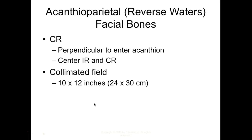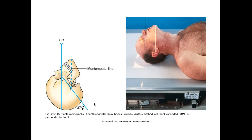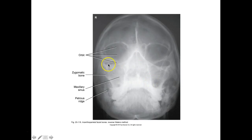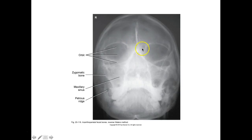Collimate smaller than 10x12 — that would be very large. This view is much easier for patients who can't tolerate the standard Waters. If a patient has difficulty extending the neck, place a sponge under their back to drop the head back as you would for an SMV. The MML enters the acanthion. The orbits will be magnified because they're further from the IR. Collimate in tight to reduce scatter — excessive fog degrades image quality significantly.